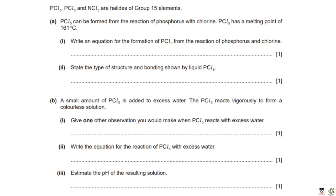PCl₅, PCl₃, and NCl₃ are halides of Group 15 elements. PCl₅ can be formed from the reaction of phosphorus with chlorine and has a melting point of 161°C. Write an equation for the formation of PCl₅: phosphorus exists as P₄ molecules. The balanced equation is P₄ + 10Cl₂ → 4PCl₅ — we need 4 in front of PCl₅ to balance phosphorus, and 10 in front of Cl₂ to give 20 chlorine atoms.